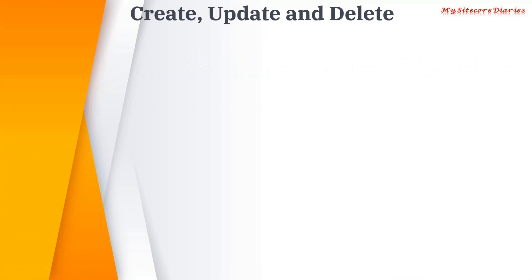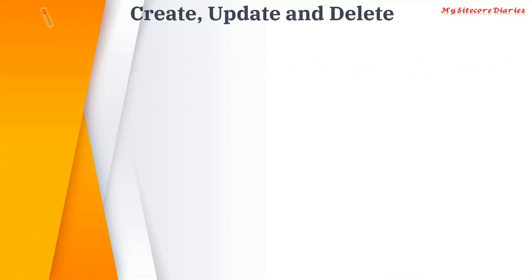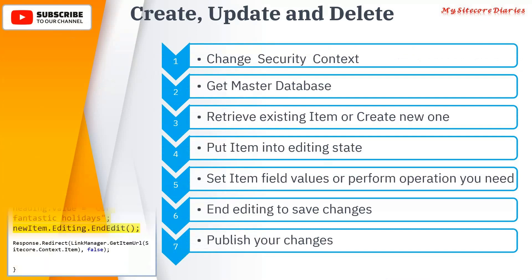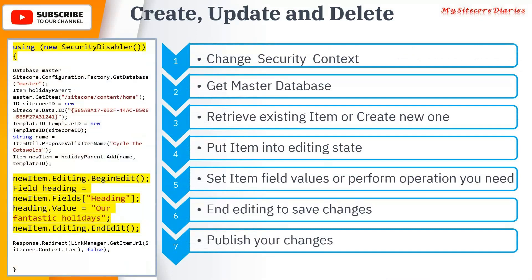Now we are going to see create, update, and delete — how we can operate on Sitecore items programmatically. There are seven steps which you need to follow to operate on any Sitecore item, and this is a sample example of code showing how you can update a Sitecore item.